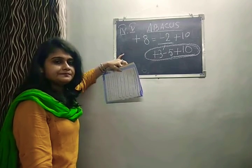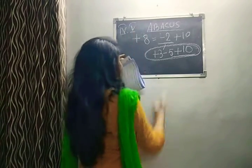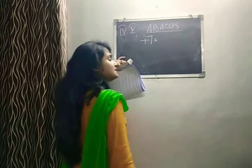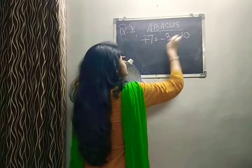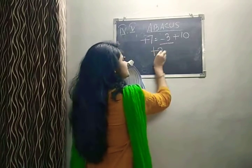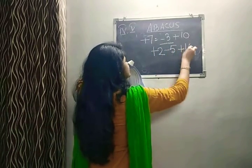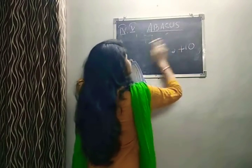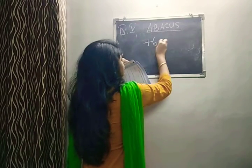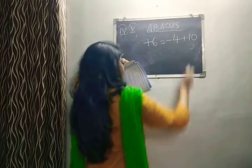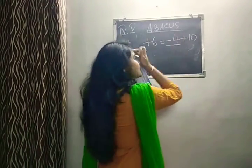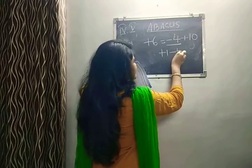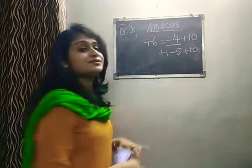For plus 7, the formula says minus 3 plus 10. Minus 3 has a small friend formula: plus 2 minus 5. Then add plus 10 — ones place done, tens place done, answer is done. For plus 6: the big friend formula is minus 4 plus 10. Minus 4 has another formula in small friend: plus 1 minus 5. Then add plus 10. Until and unless you add ten, your answer is wrong.